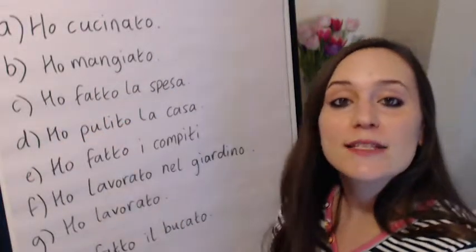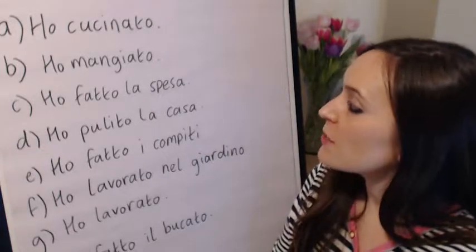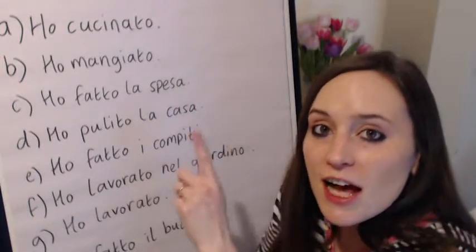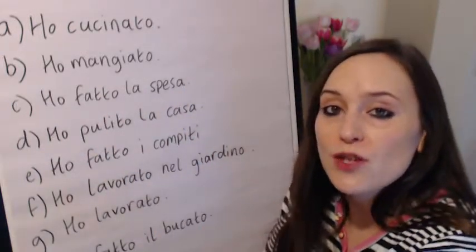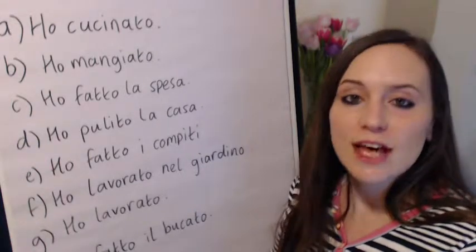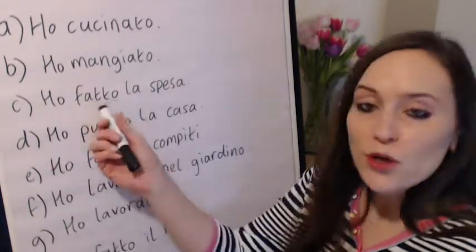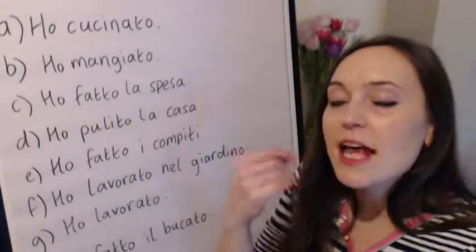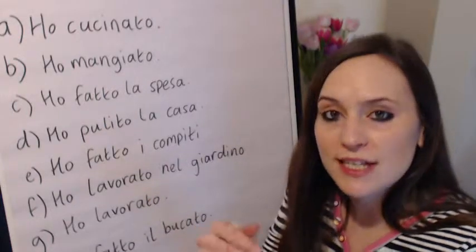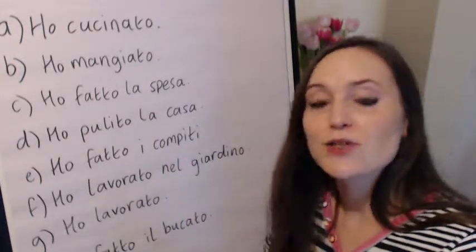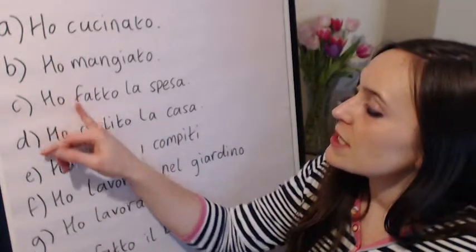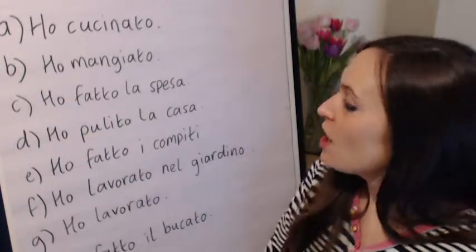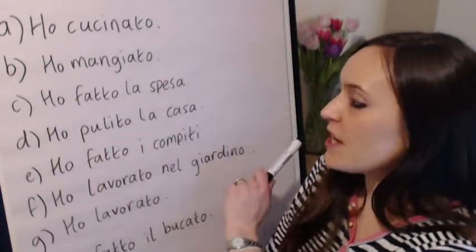Ho fatto la spesa — here we've got a verb phrase. This comes from fare la spesa, which means to do the shopping, as in the food shopping. Fatto is an irregular past participle. It's an A-R-E verb, very irregular when you conjugate it in the present tense: faccio, fai, fa. Even though it has that -ato sound, it's got a double T — fatto. Ho fatto la spesa — I did the food shopping.